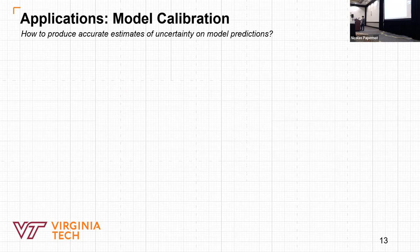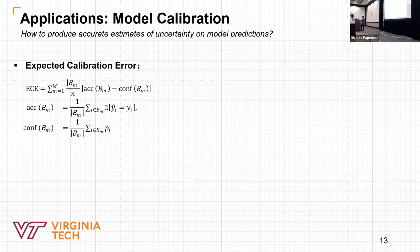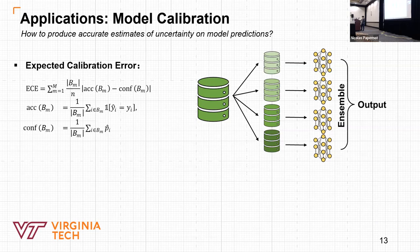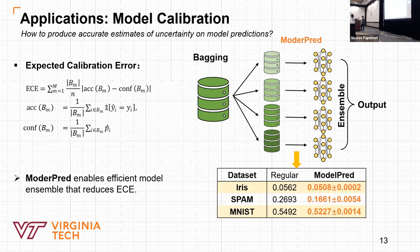The last question is about model calibration. To reduce the ECE error, which measures the weighted average of difference between prediction accuracy and confidence, we can use bagging by generating an ensemble of models on subsample datasets. With Model Parade, we can largely increase the number of models to be assembled efficiently. These results show that combining more models generated by Model Parade effectively reduces the ECE error.